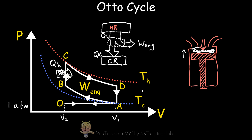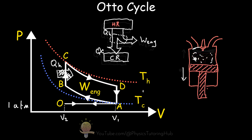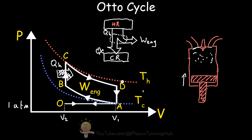Now we're at state C, where our air and fuel mixture has combusted. The gases in the chamber then rapidly expand — they adiabatically expand to state D — which means no heat is being transferred in or out of this engine. Some of the heat from this exothermic reaction is being converted to work. The exhaust valve is closed during this process.